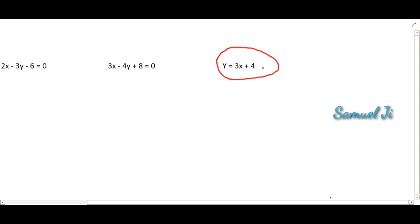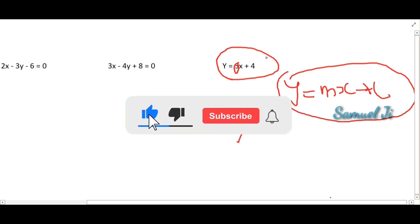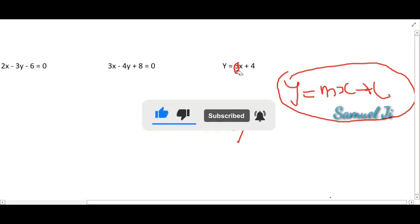y is equal to 3x plus 4. It is already given in the form of y is equal to mx plus c, we don't have to convert it. So the 3 is the m, so 3 is the slope. It is already given in the form, so 3 is the answer here as a slope.